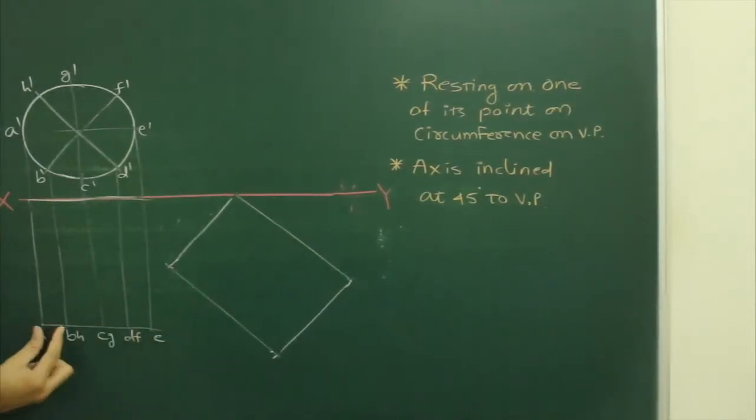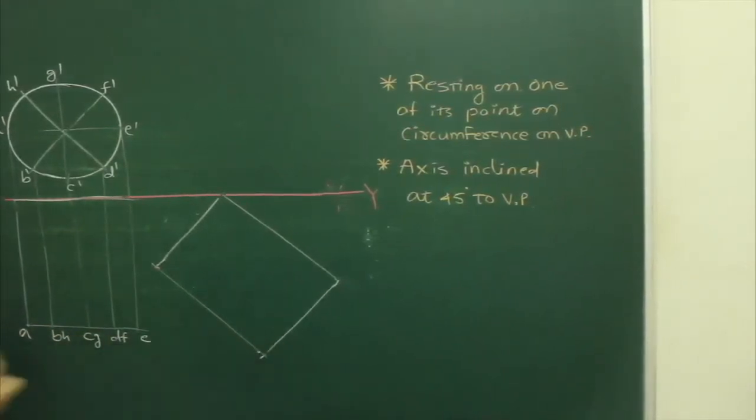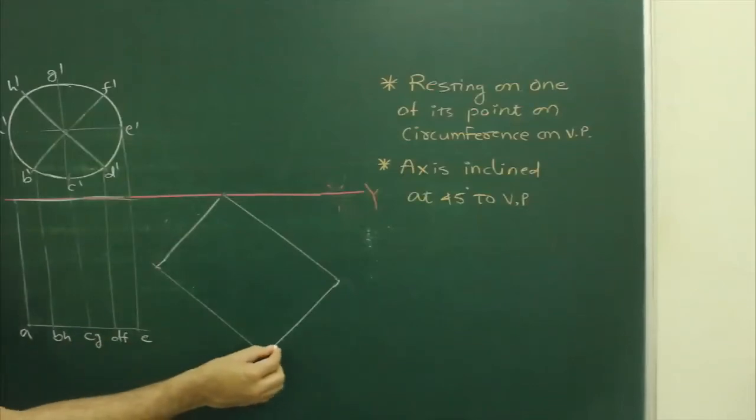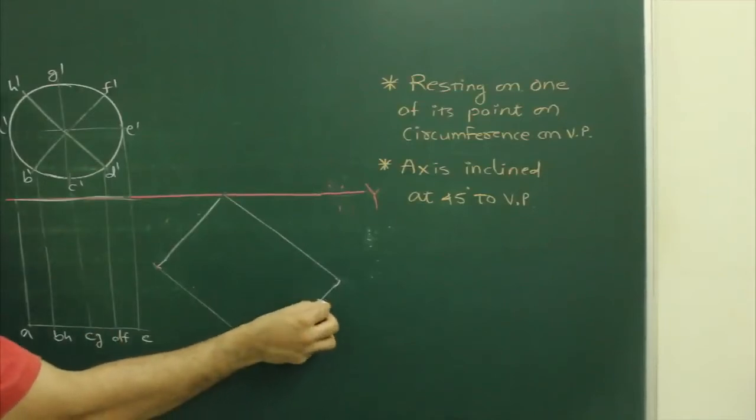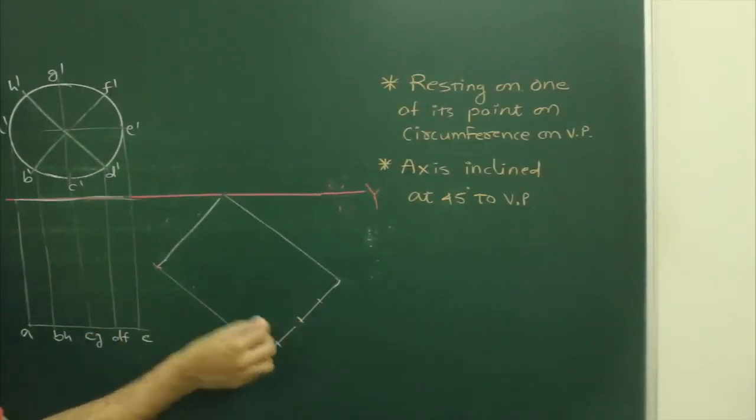After that, you take all these markings and cut on this. So take A to B, D, H. Cut over here. C, G. And then D, F.